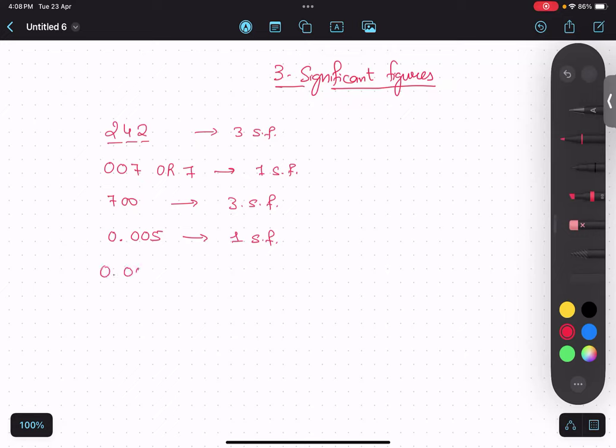0.00232. What about this? Three significant figures. So, three significant figures. I hope it is clear. Yes, sir.